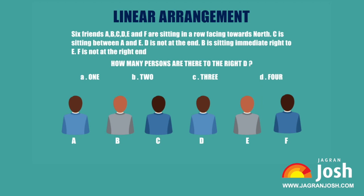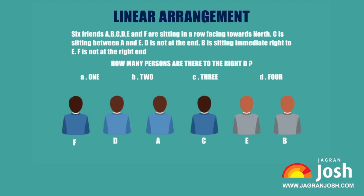In addition, F is not at the right end and D cannot be at any of the ends. We therefore get the final arrangement: F D A C E B. On the basis of this arrangement, it can be concluded that there are four people sitting to the right of D, so the answer is D) four.